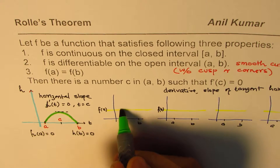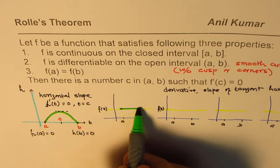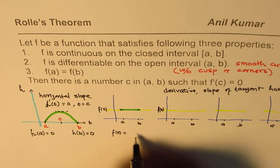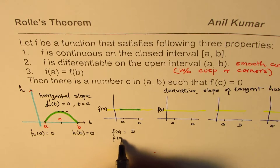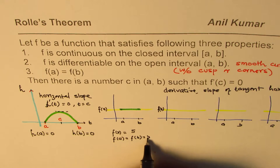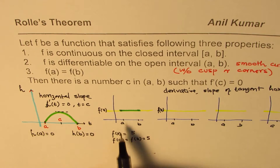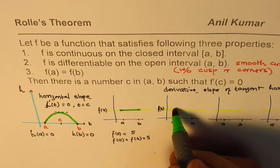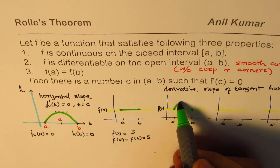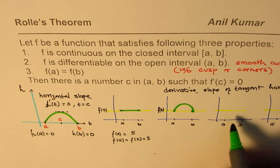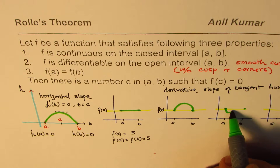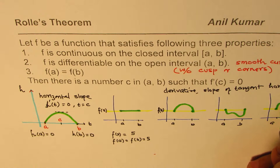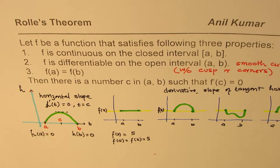One example could be a constant function: f(x) = 5, where f(a) = f(b) = 5. Otherwise, connecting points A and B, we could go up and then down, or go down and come back, or go up, go down, and come back. There are different ways to connect these two points while satisfying the conditions.